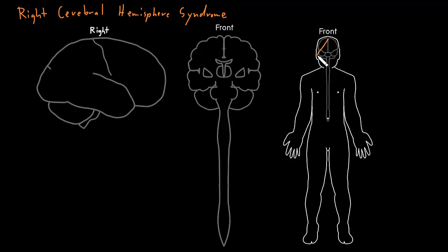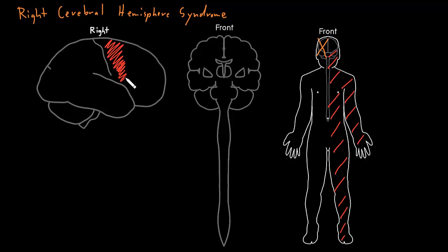Looking at our person here, if we have dysfunction of the right cerebral hemisphere, we may see weakness and upper motor neuron signs of the left side of the body, because the right cerebral hemisphere in general controls most of the skeletal muscle on the left side of the body. The upper motor neurons start in the area of the right cerebral hemisphere for the left side of the body.